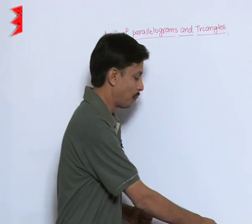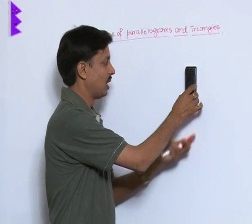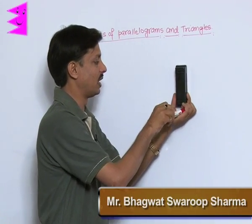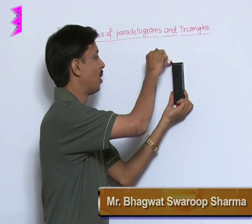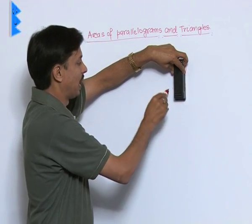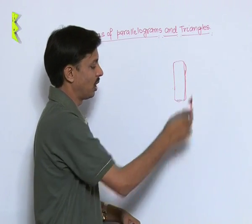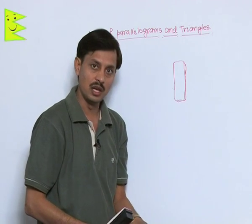Suppose you put this duster on this board, then whatever surface, whatever amount of the surface hides on the blackboard by the surface of duster, this is known as its area.